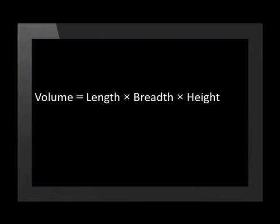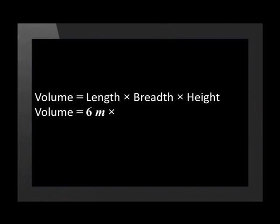When something is cubed, it means to the power of 3. The units for volume are cubed because of the formula we use when we calculate volume. Volume is equal to length times breadth times height. This means that we multiply three measurements that have the same unit. To calculate the volume of a rectangle with length equal to 6 meters, breadth equal to 3 meters, and height equal to 4 meters, we substitute into the formula. Length is replaced by 6 meters, breadth by 3 meters, and height by 4 meters. 6 times 3 times 4 is equal to 72, and meters times meters times meters is equal to meters cubed.